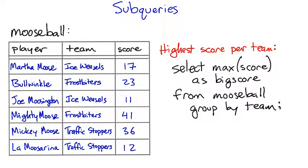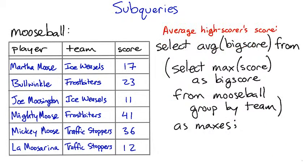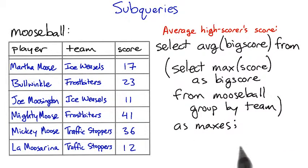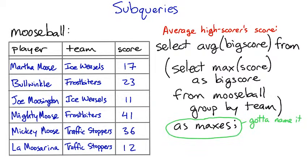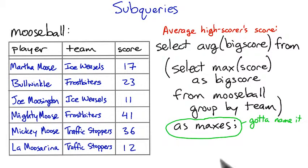But suppose that we want to know what the average score of a highest score is. To do this, we can take this whole query and stick it inside of another query. The outside query gives the average of the inside query's results. The syntax of SQL requires that we give the subquery result table a name — 'maxes' here — even though we don't actually use that word anywhere in the query. It's just required.